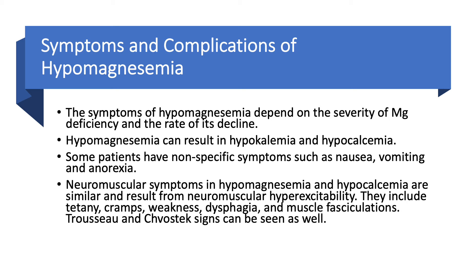Severe and profound hypomagnesemia is going to suppress PTH — the parathyroid hormone — causing hypocalcemia. So these three things go together: hypomagnesemia, hypokalemia, and hypocalcemia. Many patients have nonspecific symptoms like you would see with any electrolyte disorder: nausea, vomiting, fatigue, poor appetite, and malaise.